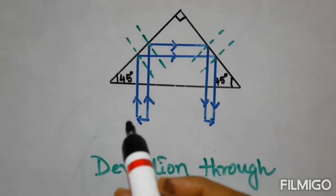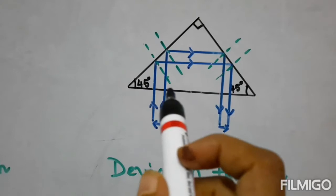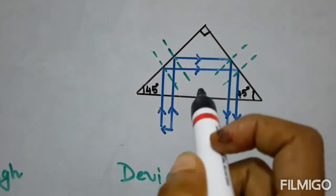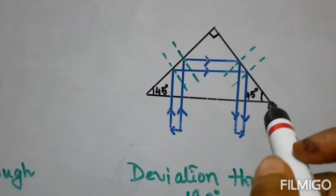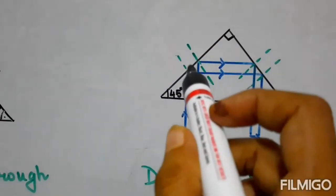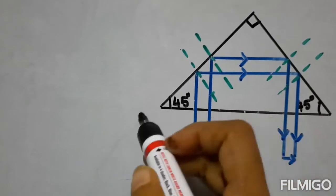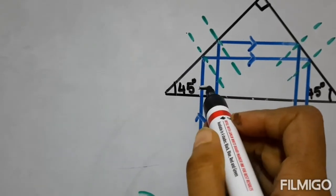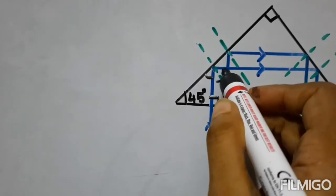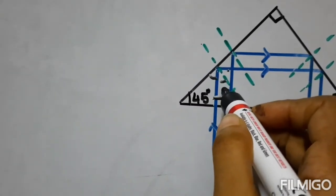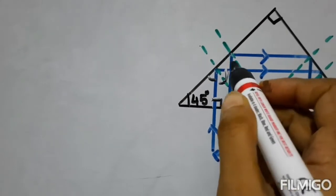In the second case, the incident ray is incident perpendicularly but from the side opposite to the right angle — that is, from the hypotenuse of the prism. When it is perpendicularly incident it passes undeviated. We can calculate the angles similarly: since this is a right angle, this angle will be 45° and this angle will also be 45°.